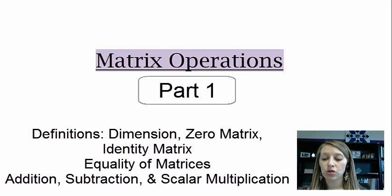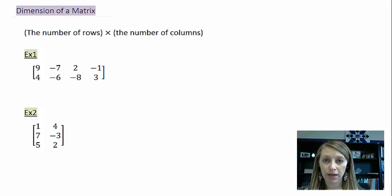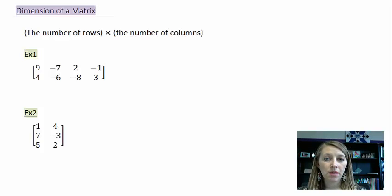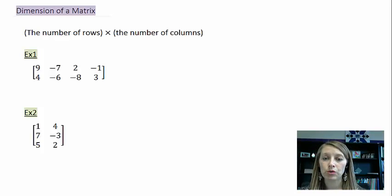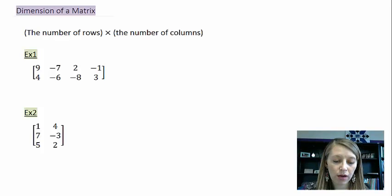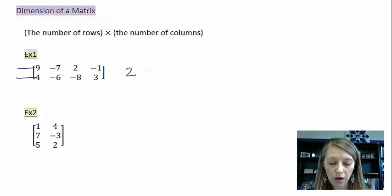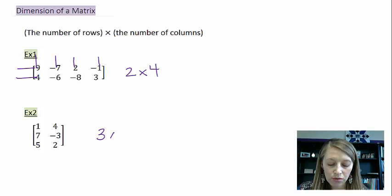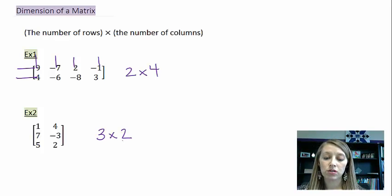The very first thing we need to talk about is the dimension of the matrix, which is defined by the number of rows by the number of columns. I have two examples here — I suggest you pause the video and figure out their dimensions. The answer to number one is a two by four: it has two rows and four columns. Example two is a three by two: three rows and two columns.